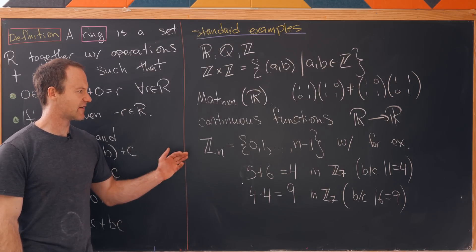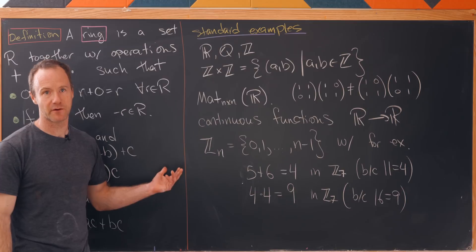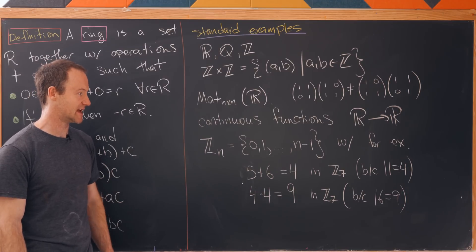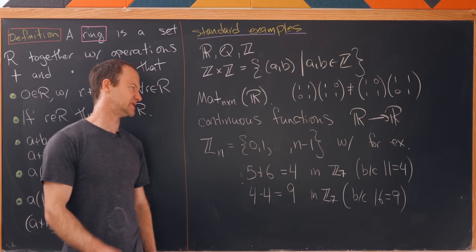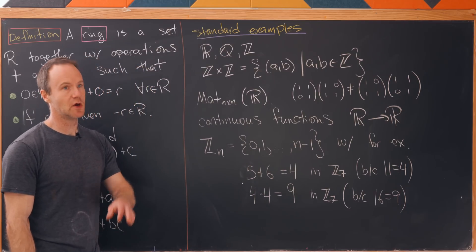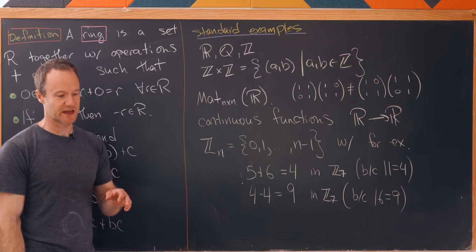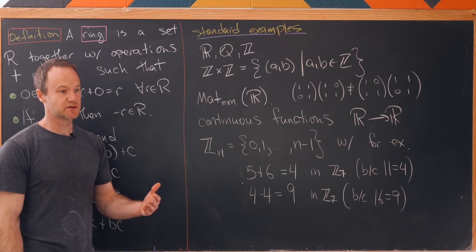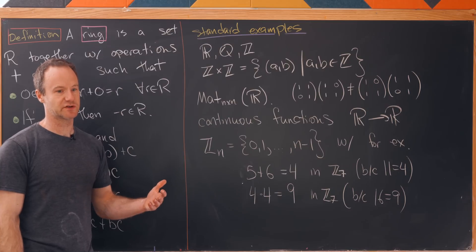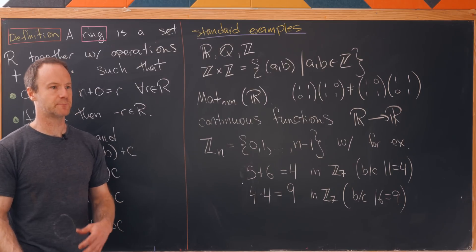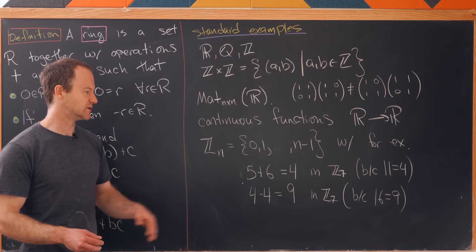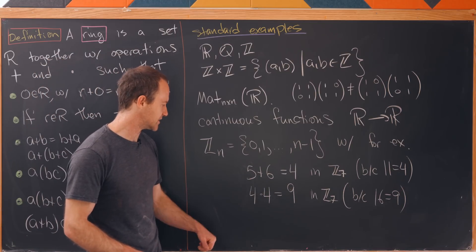Then you could have maybe a classic example from an abstract algebra type class which would be Z_n. And we could take this to be like the numbers zero to n minus one where your addition and your multiplication are defined so that you do normal addition and multiplication and then you divide by n and keep the remainder.